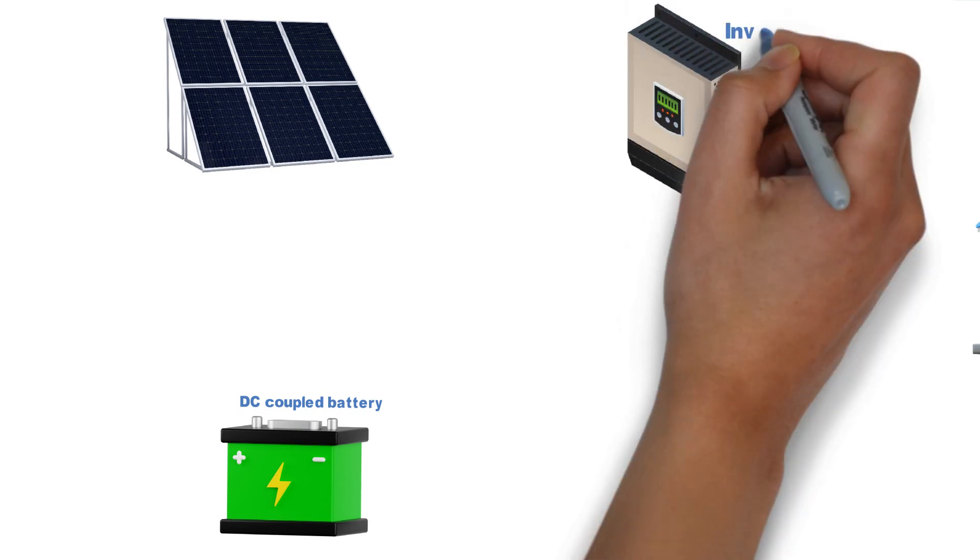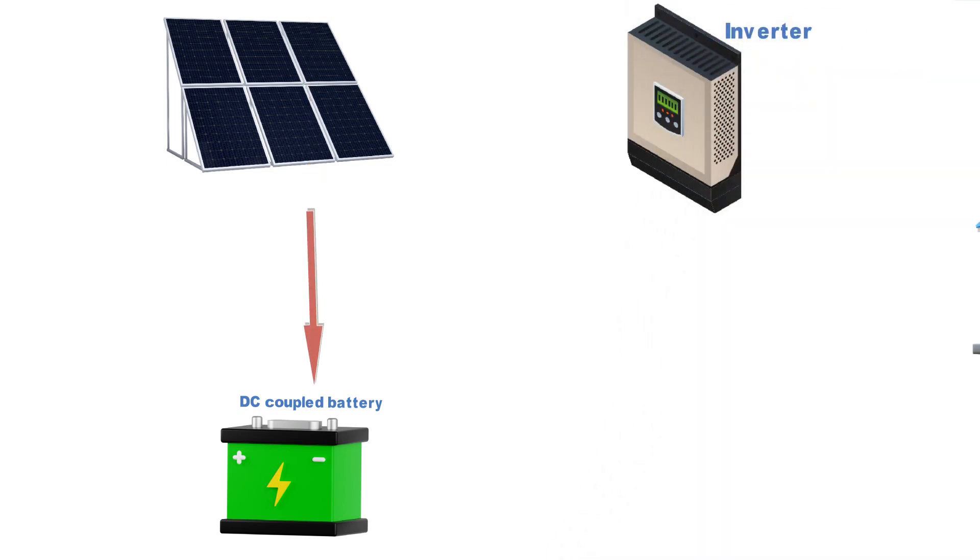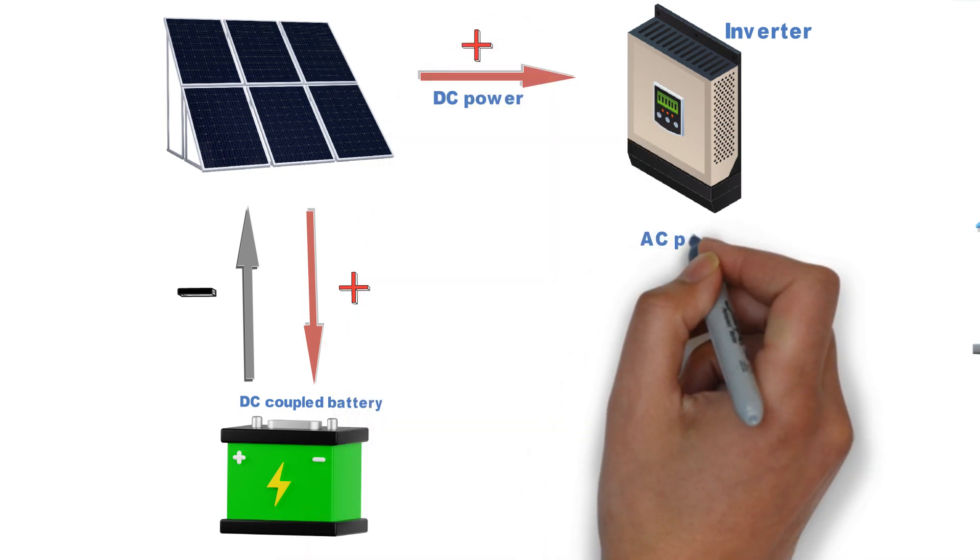The power generated from the solar panels will be stored in the battery storage until the power is required by the house or the battery is full. Power will then flow from the battery and solar panels to the inverter where it is changed from DC power to AC power.